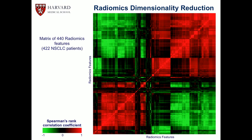In a study using data from 422 non-small-cell lung cancer patients, we presented a correlation heat map — radiomics features on both axes. You can immediately spot that there are many highly correlated features — a lot of redundancy. So we have to reduce this dimensionality, drilling down to the most informative features.